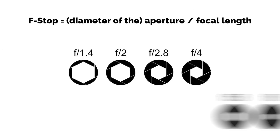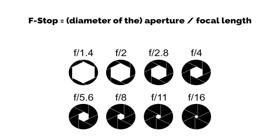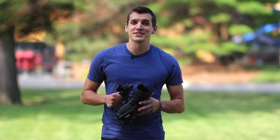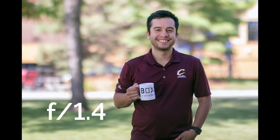So here's the confusing part. Aperture values are described by f-stops. An f-stop is the ratio of the opening of a lens aperture when compared to the size of the lens. What can be confusing here is that a higher f-stop is actually described by a lower number. So f1.4 will give you an image like this, whereas f22 will give you an image like this.